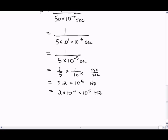So let's rewrite this as 2 times 10 to the minus 1 times 10 to the 5 hertz. So how do we get that? Well, 0.2 is the same as 2 over 10, which is 2 times 10 to the minus 1.